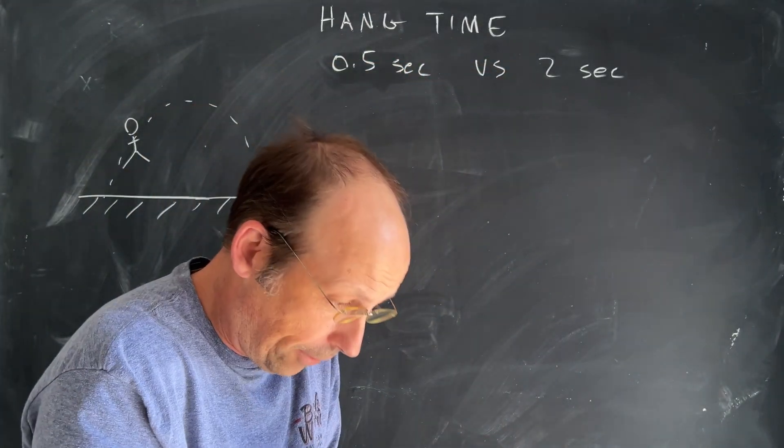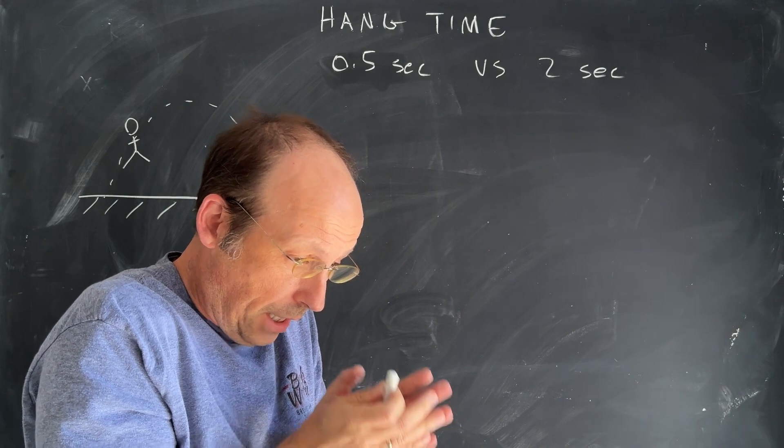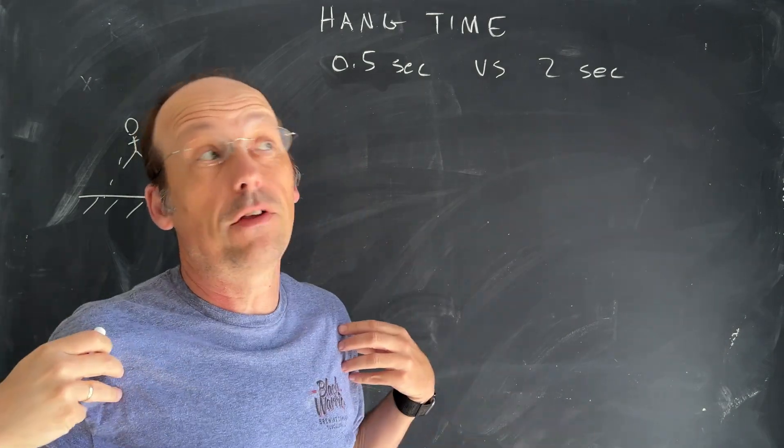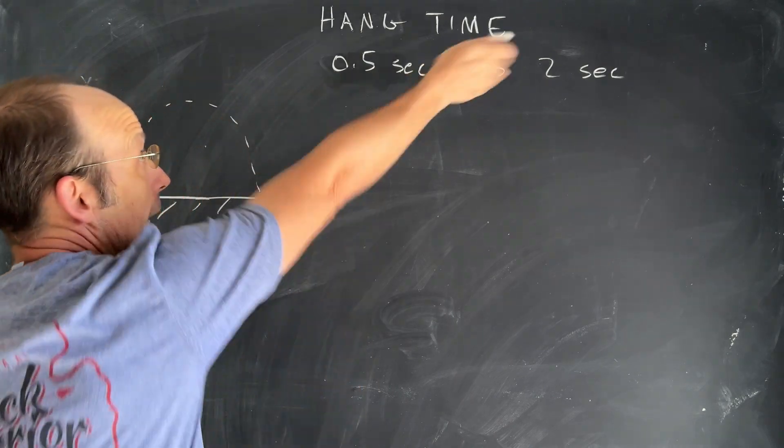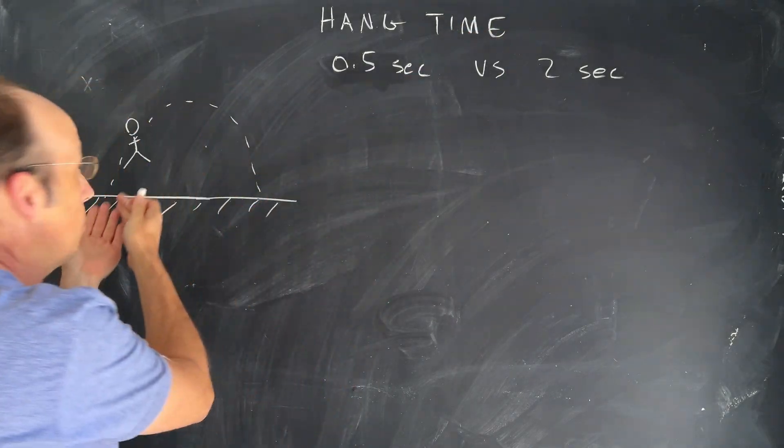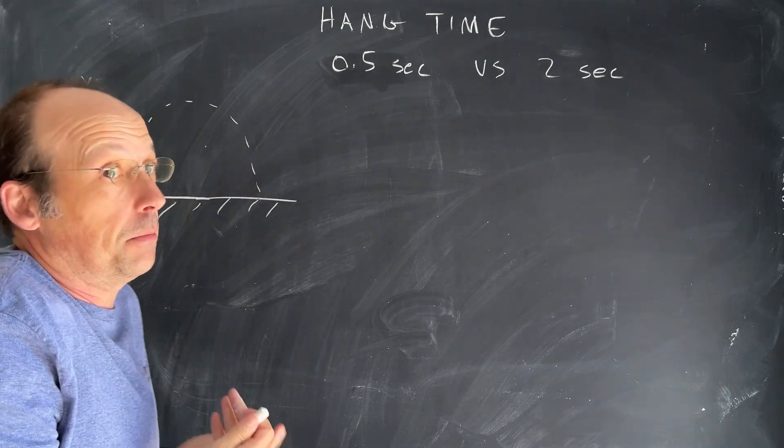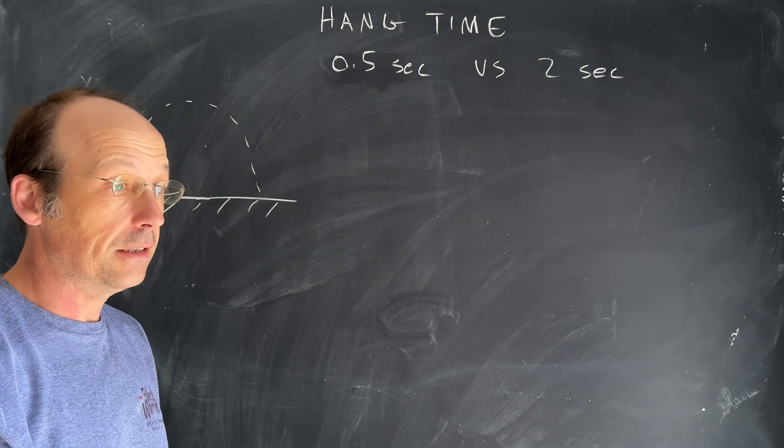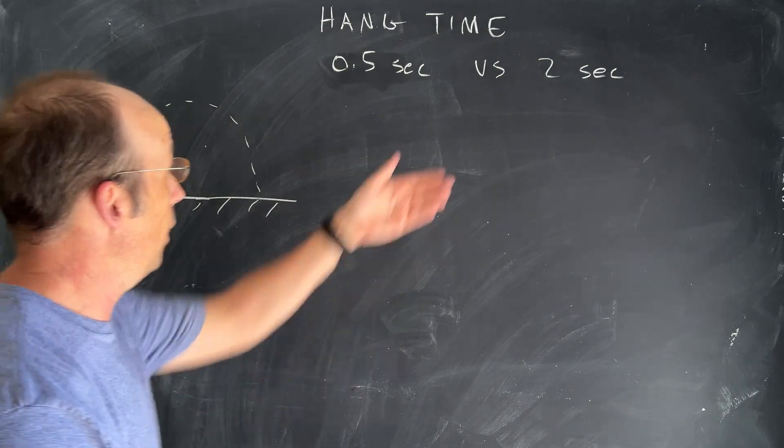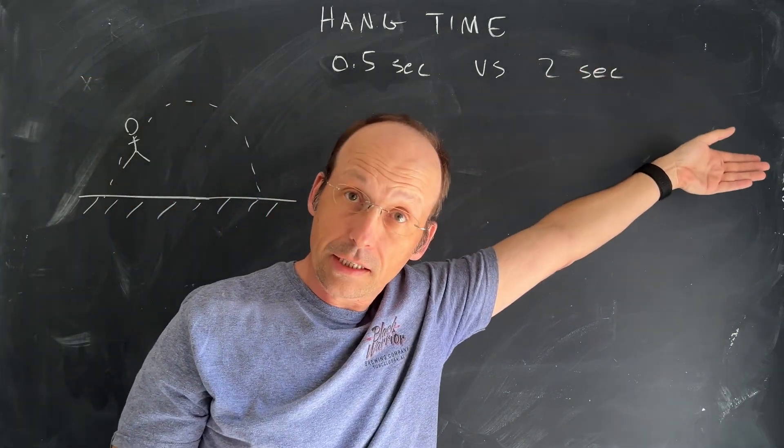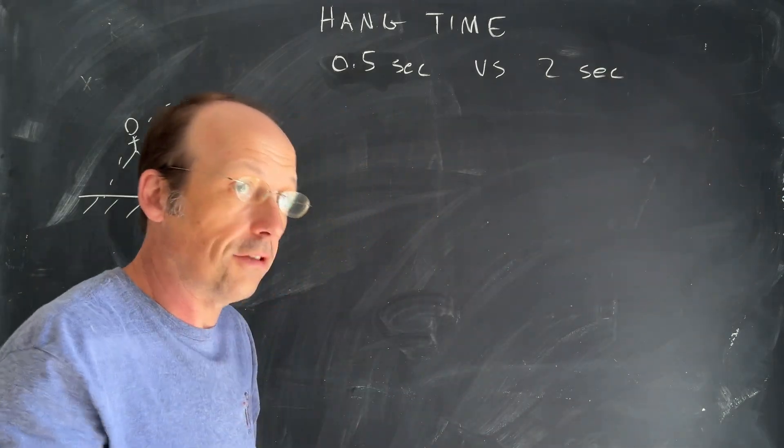Physics problems. So we're doing kinematics and working on kinematics problems. And so this is a pretty fun one. I think it's pretty fun. You might not like it. And it's about hang time. So imagine you have someone that jumps, and they're in the air for some amount of time. And imagine someone has a hang time of 0.5 seconds. How high do they go? What if they have a hang time of two seconds? How high do they go?